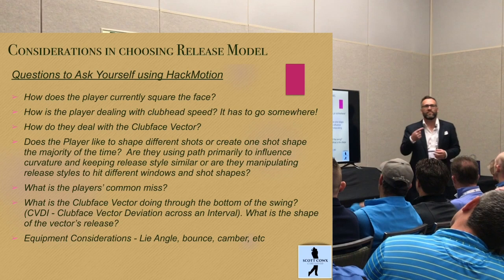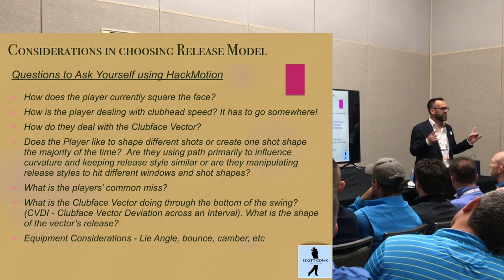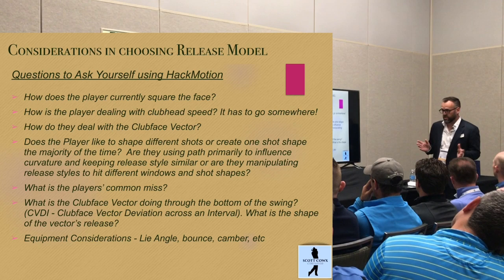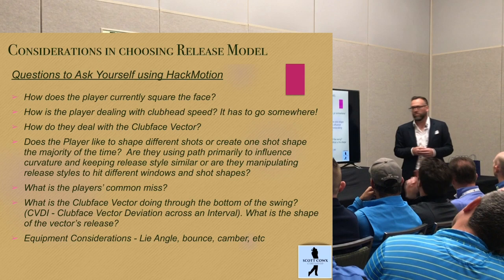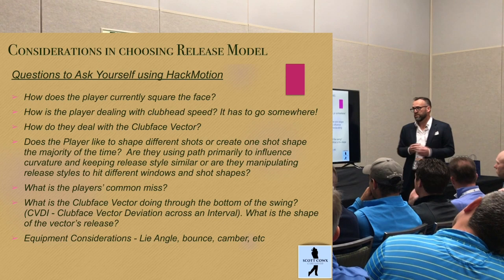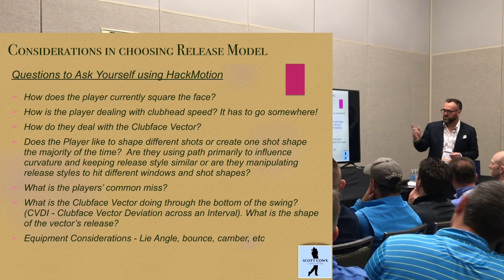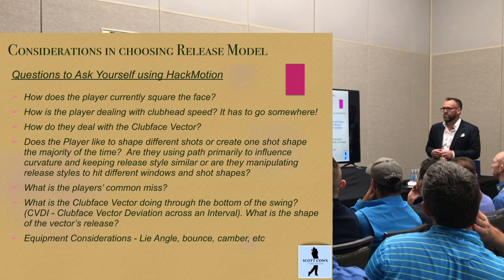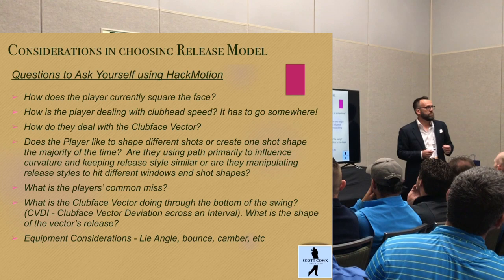Something I hope to get into is how players deal with the clubface vector — where that face is in space. That face has both a left-right component and a loft component. I don't like rate-of-closure conversations because the loft component isn't taken into consideration. Does the player like to shape different shots, or do they create one shot shape most of the time? Are they using path primarily to influence curvature, or are they manipulating release styles to hit different windows and shot shapes?